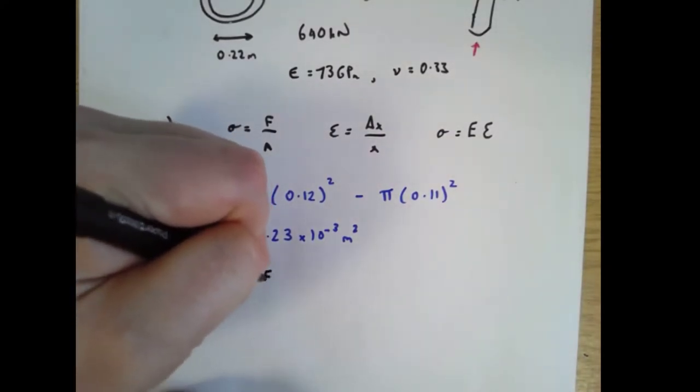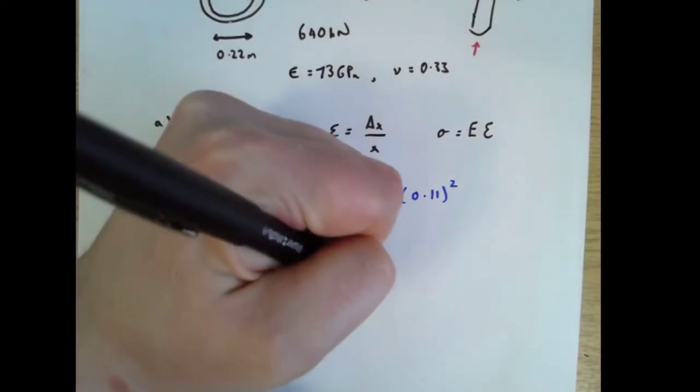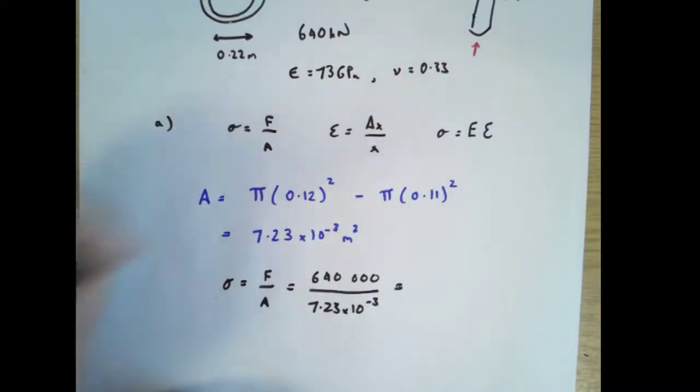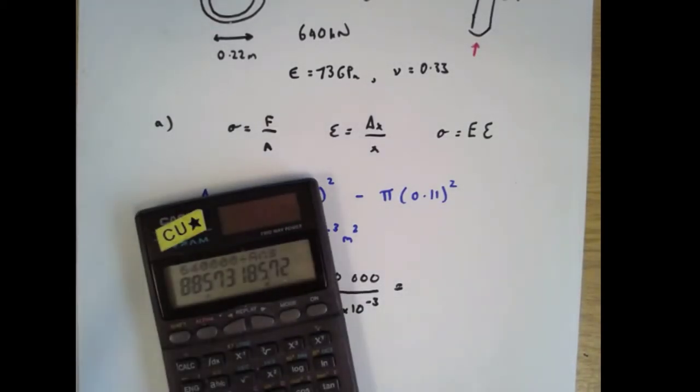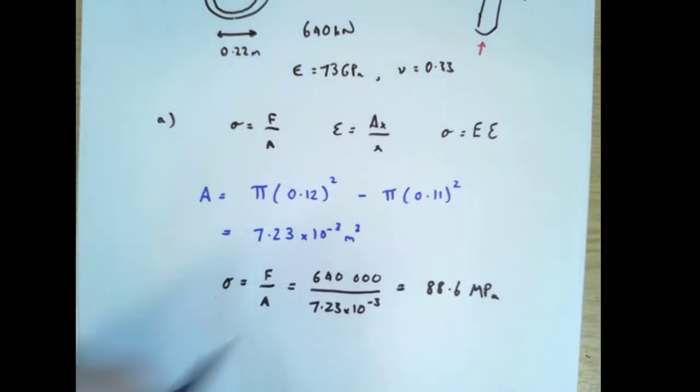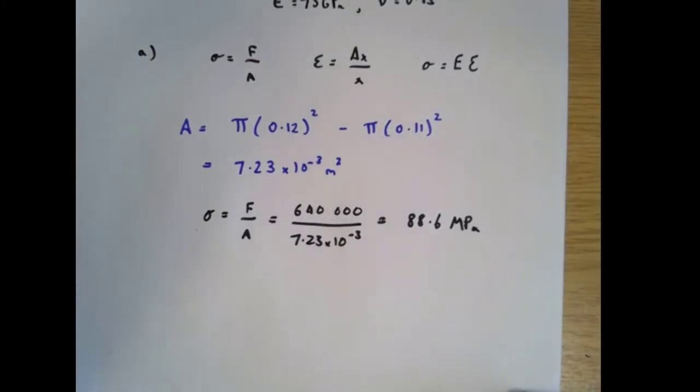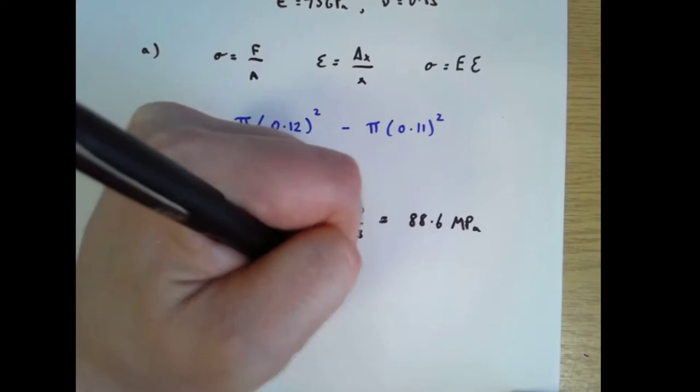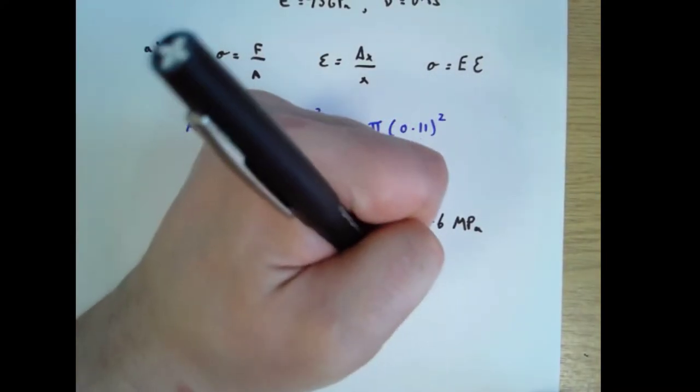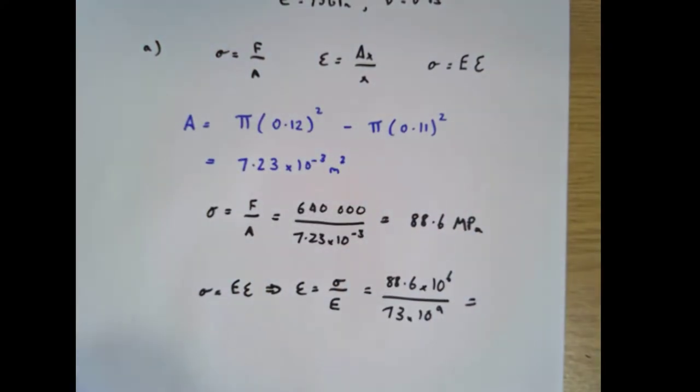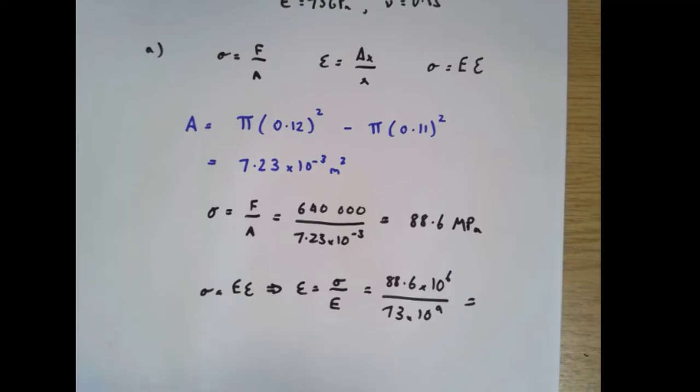So now I can go back to what I was doing. Now I can calculate stress in the pipe is force over area, which is going to be 640,000, that's the force we were given, divided by 7.23 times 10 to the minus 3. And that comes out to be 88.6 megapascals. So that's the stress. Next, I can use stress is Young's modulus times strain. So therefore strain is stress divided by Young's modulus, which is 88.6 times 10 to the 6 divided by 73 times 10 to the 9. And that comes out to be 1.21 times 10 to the minus 3.